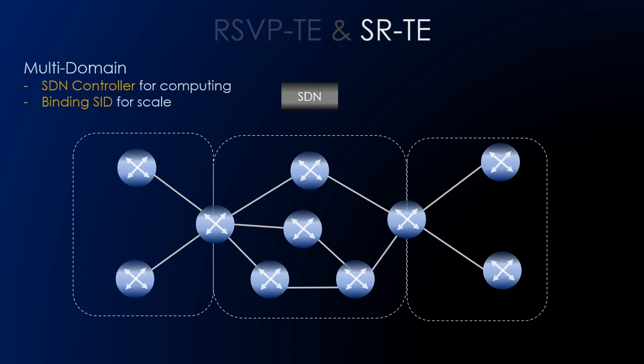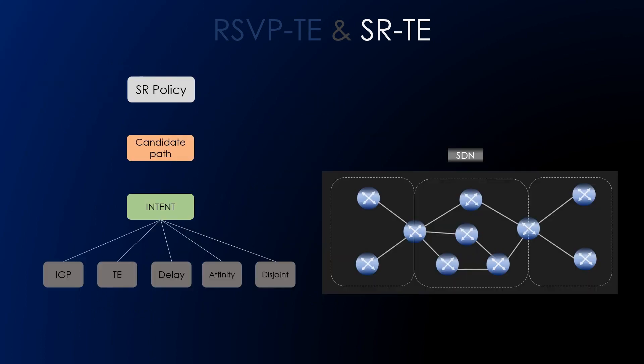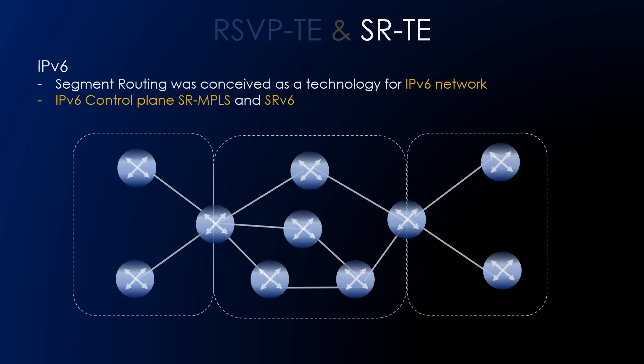In segment routing with multi-domain, an SDN controller is used for computing binding SIDs for the scale being used. Whenever we talk about segment routing, we have something called an SR policy. That SR policy will have a candidate path, and the intent is defined using many attributes such as IGP, TE, delay, affinity, and disjoint paths. Segment routing was conceived as a technology for IPv6 networks and natively supports IPv6 derived from routing protocol v6 address family support, consistent with IPv6 specifications.